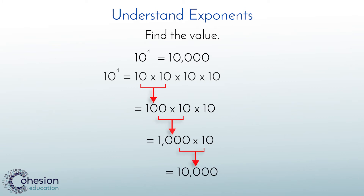It is important when multiplying a number repeatedly to be sure to keep track of how many times the number is being multiplied. Another strategy when multiplying by tens is to notice how the exponent and number of zeros in the answer relate. We can see that 10,000 has four zeros at the end and the exponent is 4, or to the fourth power.